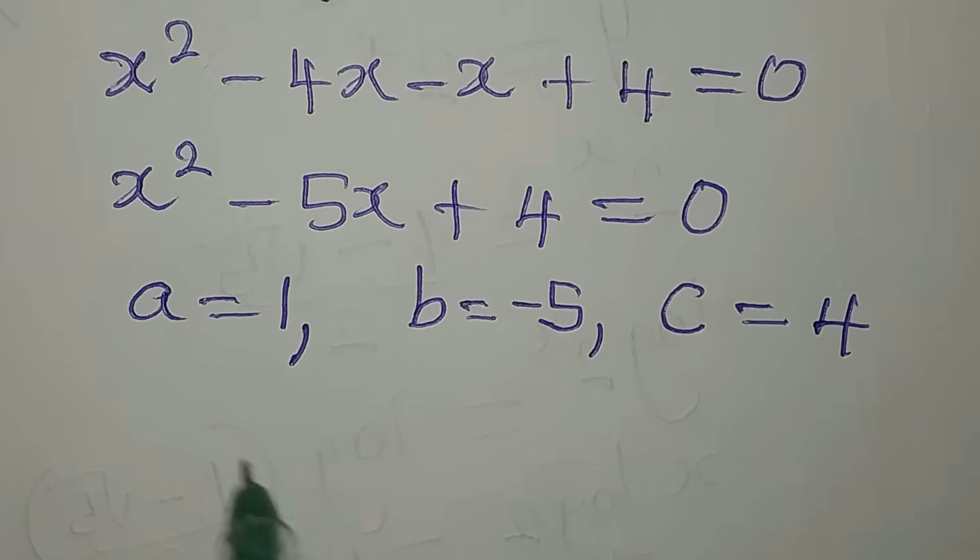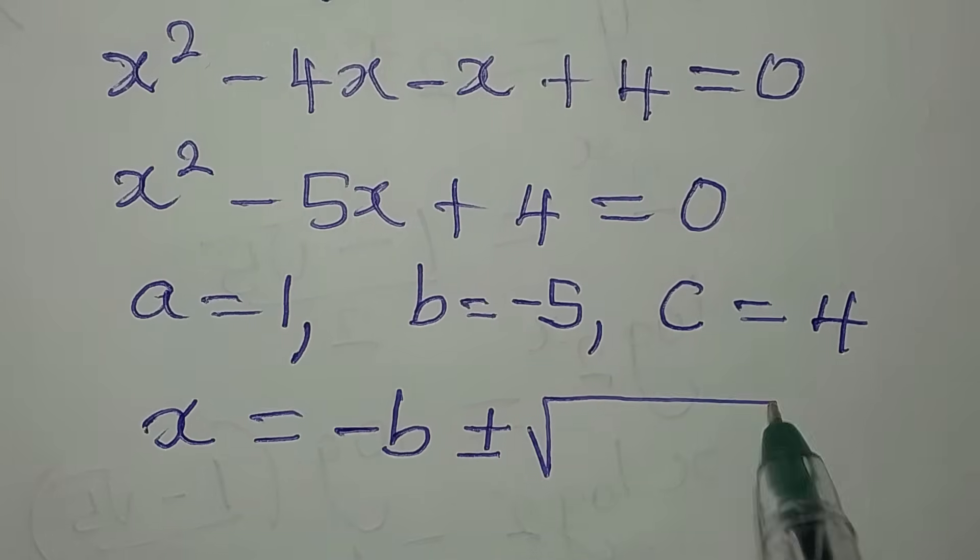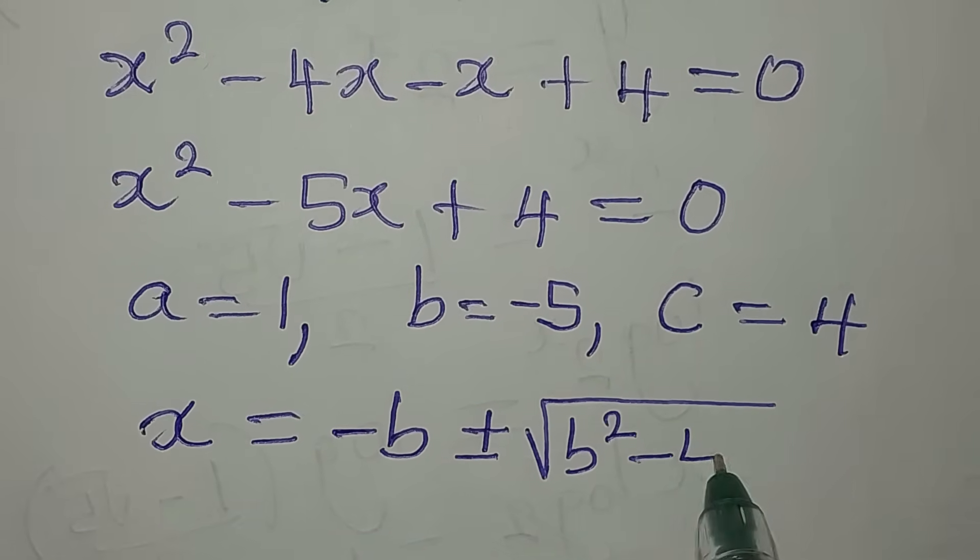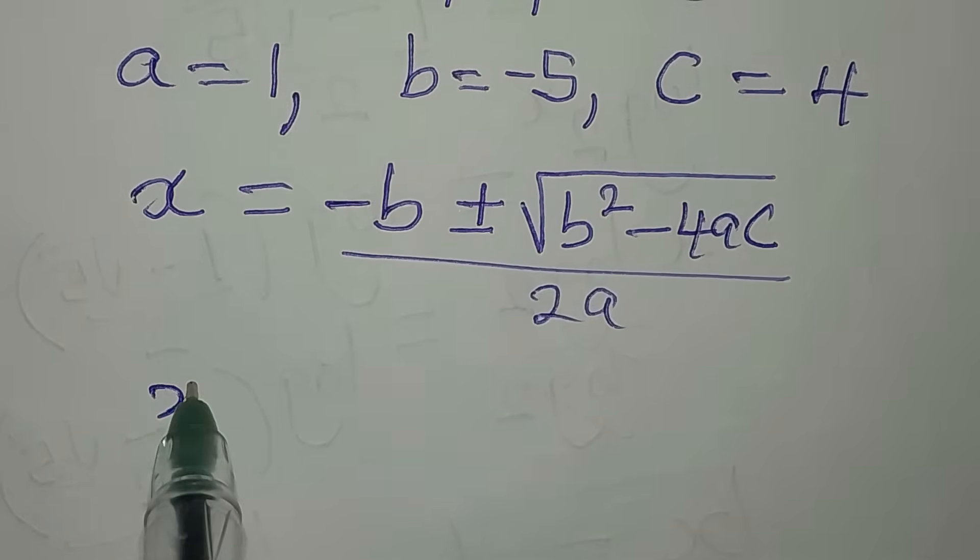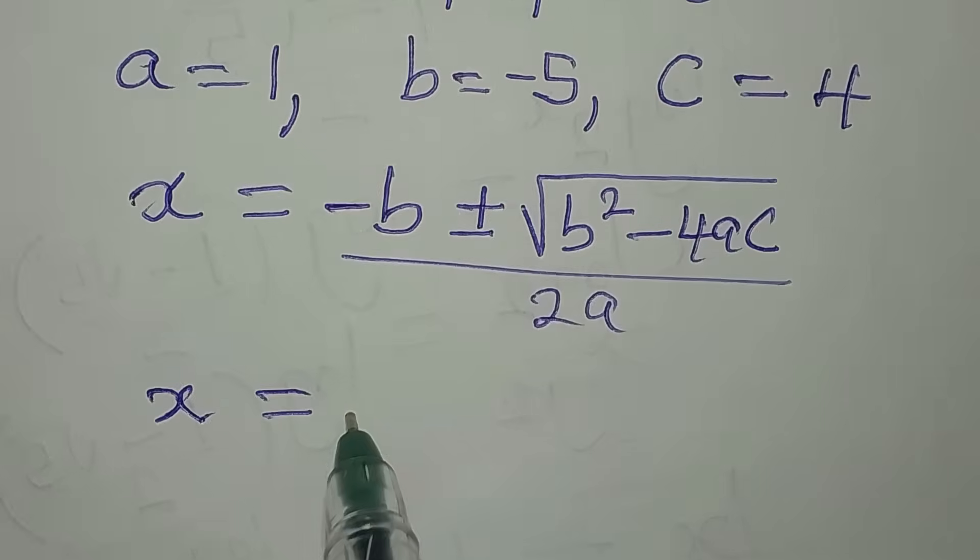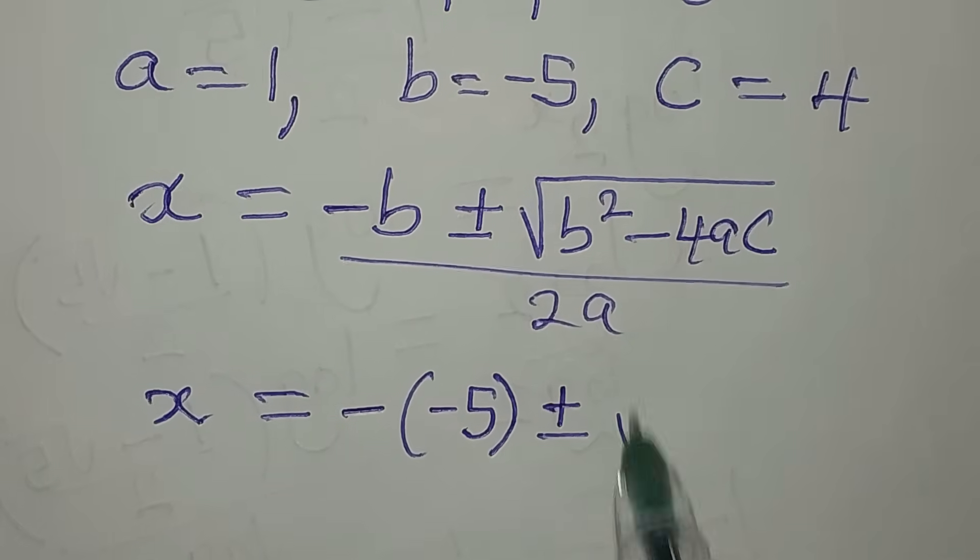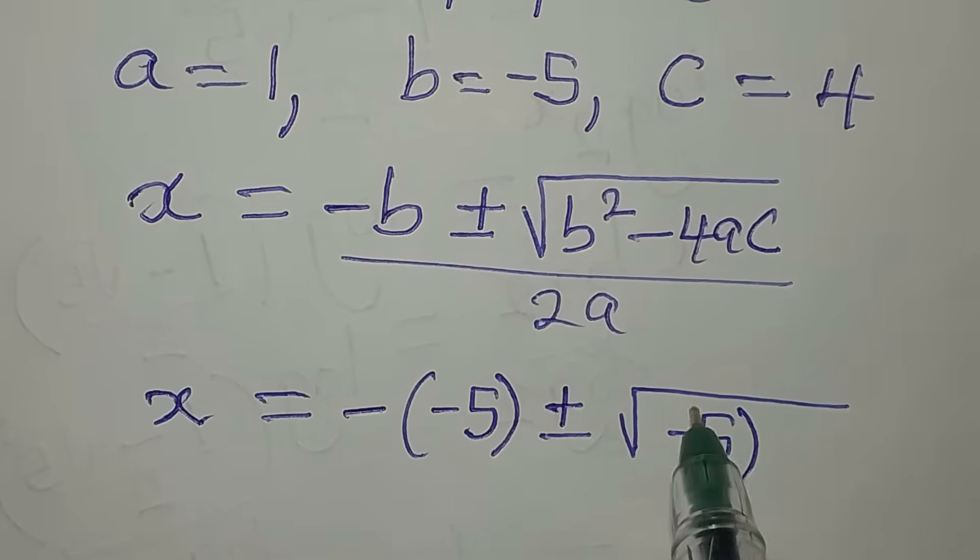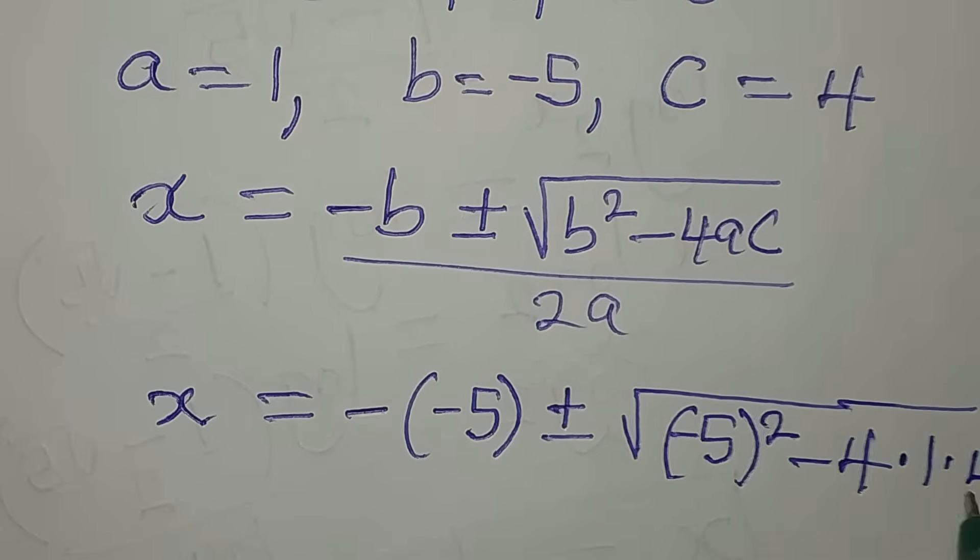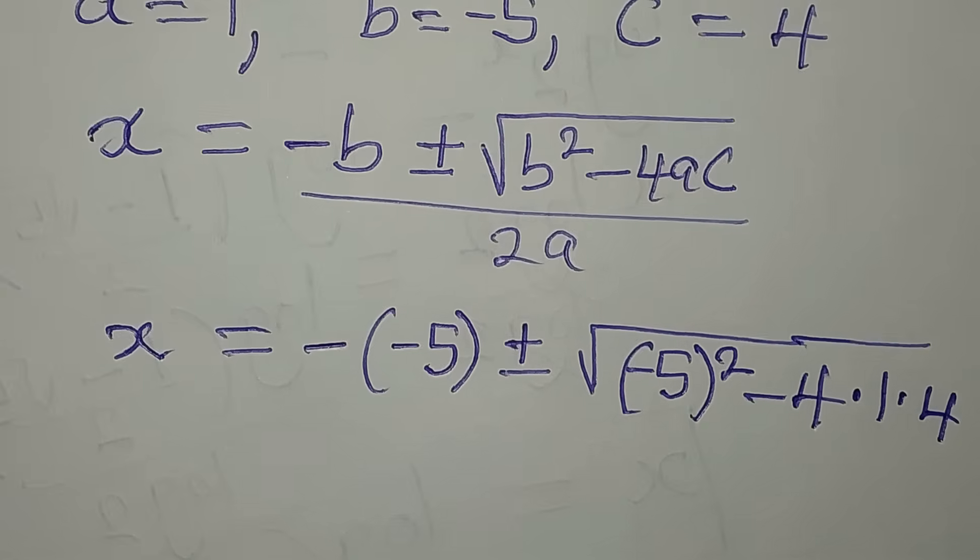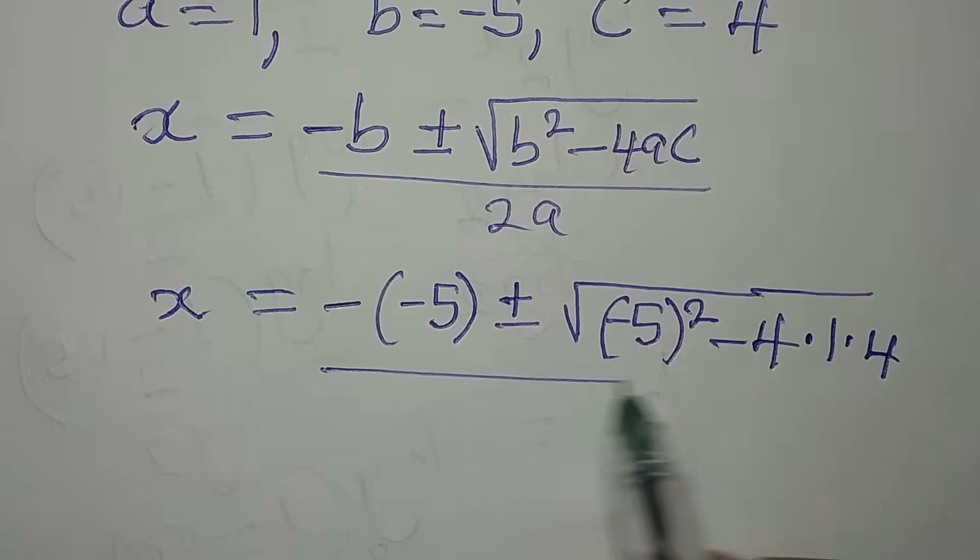The most difficult part when dealing with the formula method is remembering the formula. So let's deal with this. The formula is x equals negative b plus or minus square root of b squared minus 4ac over 2a. Now let us substitute. x will be equal to minus b, which is minus of minus 5, plus or minus square root of b squared, which is minus 5 squared, minus 4 times 1 times 4, divided by 2 times 1.